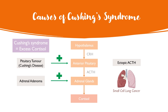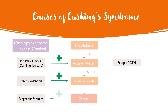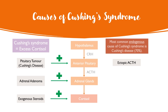Another rarer cause is ectopic ACTH production, for example as seen in small cell lung cancer, where the cancer cells secrete ACTH, which also has the byproduct effect of increasing cortisol. There could also be a direct increase in cortisol levels from exogenous steroid usage, for example from medications or substance abuse. The most common endogenous cause of Cushing's syndrome is in fact Cushing's disease, and this is important to remember for the diagnosis of the condition.